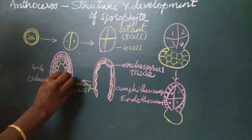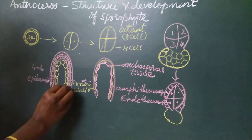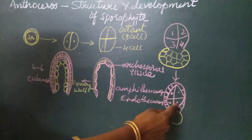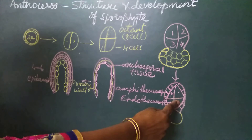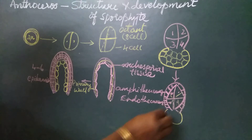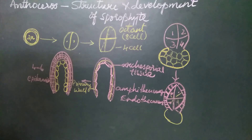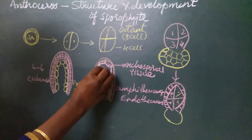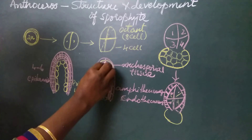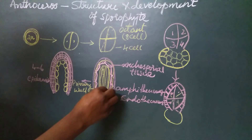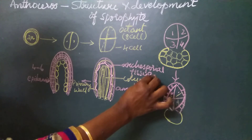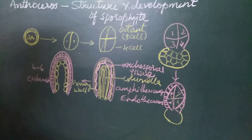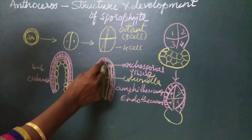The archesporial tissue appears as a dome-like structure on the columella layer. The inner mass of cells called the endothesium has eight cells; all eight cells will divide once to become sixteen cells. All sixteen cells of the endothesium grow vertically and form sixteen vertical rows of cells, which form the columella. The complete endothesium is used in the formation of the columella, and the amphithesium develops the wall layers and the sporogenous tissue.